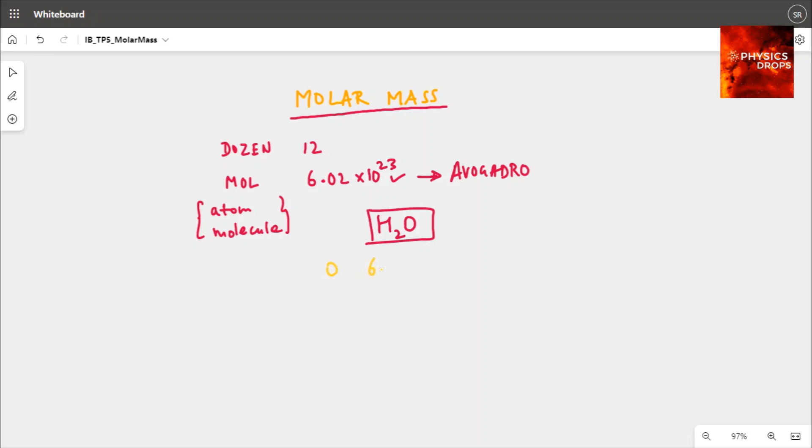When they say molar mass of a water molecule, it would mean so many number of water molecules are taken and their mass. So whenever we say mole, it just means so many number of that particular item, be it molecule or be it atom.